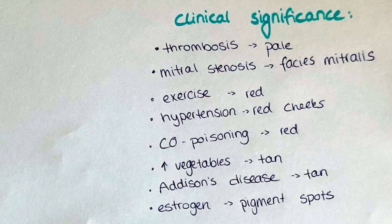A pale color of the skin of a leg can indicate a thrombosis, and in the case of a mitral stenosis, the face presents with red cheeks and otherwise pale facial skin color. We call this appearance facies mitralis.